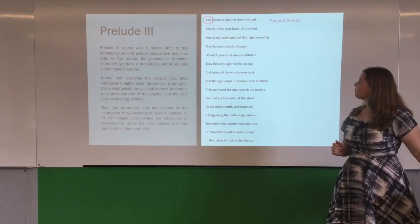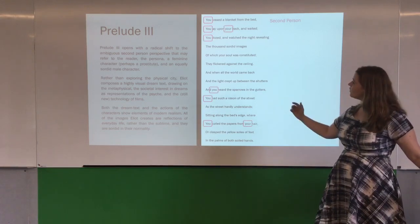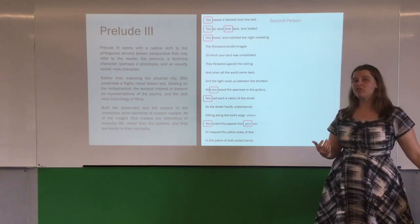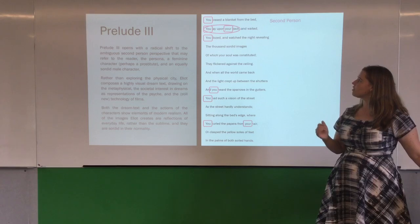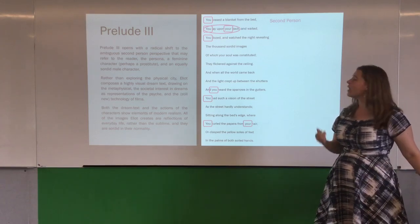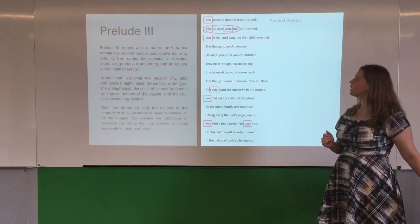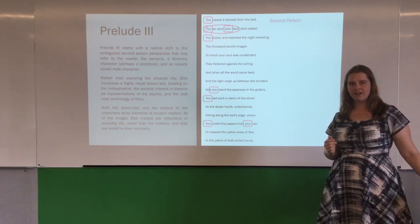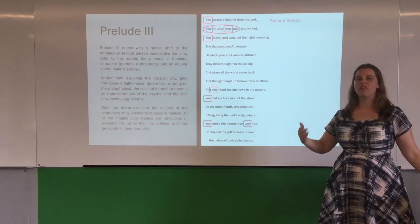We see in Prelude number three the perspective is very different. Look at all of these examples of second person pronouns. Who is 'you'? Of course it is the reader. Many people also claim that the 'you' is a prostitute, because look at the sexual connotations of those first few lines. We have the setting of a bed — it's very racy for 1910, 1911 — and we've got the character lying upon their back.